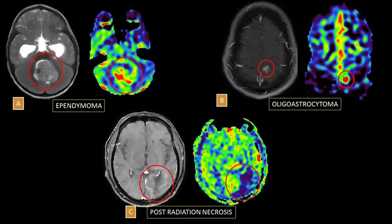A few more examples: this is a case of ependymoma showing patchy hyperperfusion — this is the area that should be biopsied to get the highest grade on histopathology and avoid sampling bias. A small oligoastrocytoma showing hyperperfusion. In a post-treatment follow-up patient with a small area of peripheral enhancement and irregular margins, ASL shows the area is completely hypoperfused — consistent with post-radiation necrosis with no obvious residual tumor.